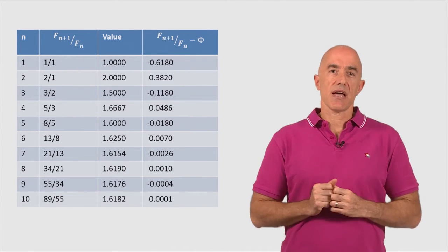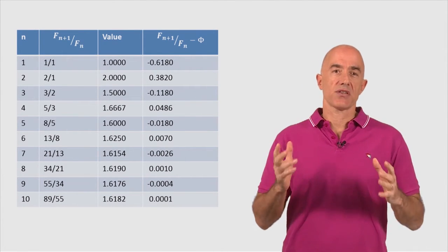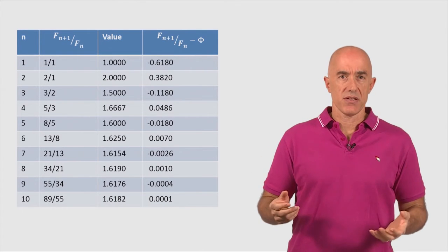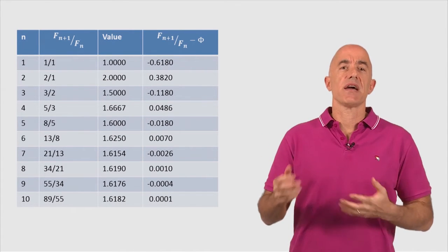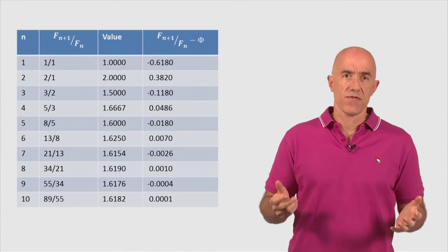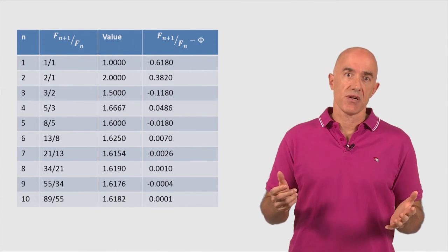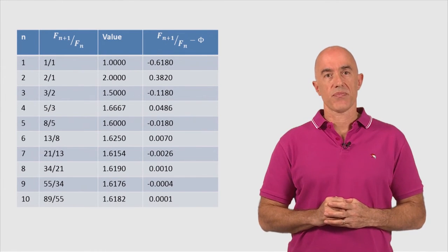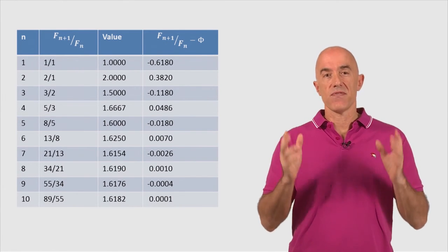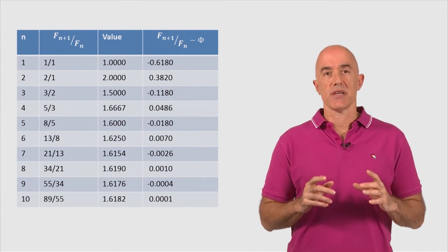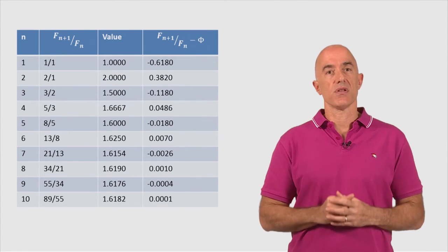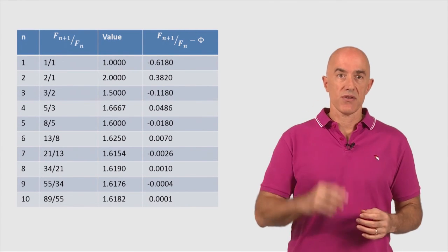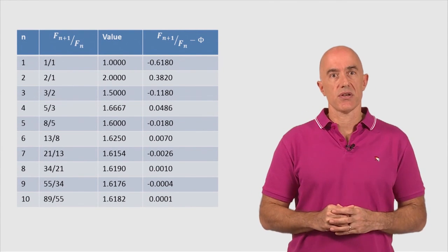In the next lecture, I can actually show you what the Fibonacci numbers are — we can find a formula for the Fibonacci numbers that contains the golden ratio. That will be a very interesting formula called Binet's formula. I'll see you in the next lecture.